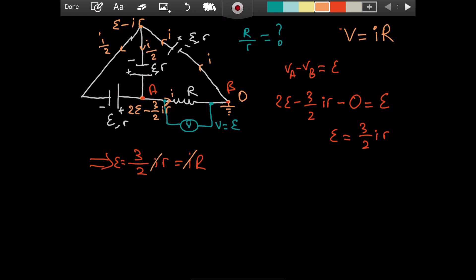We have that 3 over 2 small case r equals capital R. We are looking for capital R divided by lowercase r. So we get that ratio equals 3 over 2. And that's our final result.